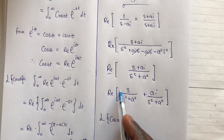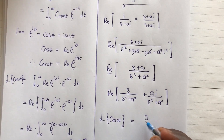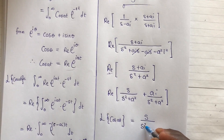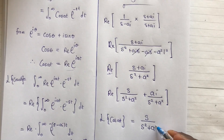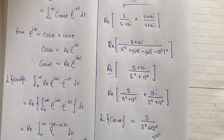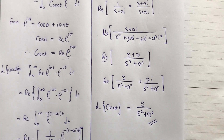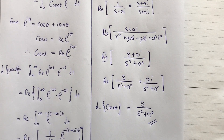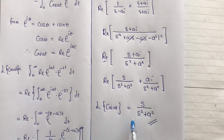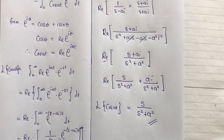So the Laplace transform of cos(at) equals s over (s squared + a squared). Thank you for joining me. Watch the video on the Laplace transform for sin(at) where I explain in detail and use another method to arrive at the same answer. Thank you very much for joining me — this is Tuta Think.